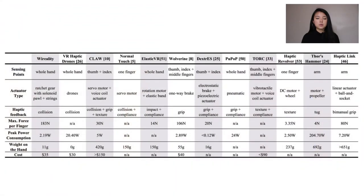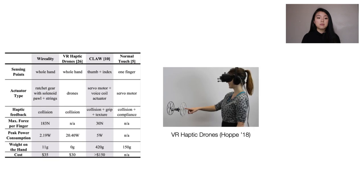We compare Virality with other hand-centric haptic systems. Among the devices that provide collision feedback, for example the VR haptic drones, while the method is innovative, it consumes 10 times the amount of power compared to Virality.